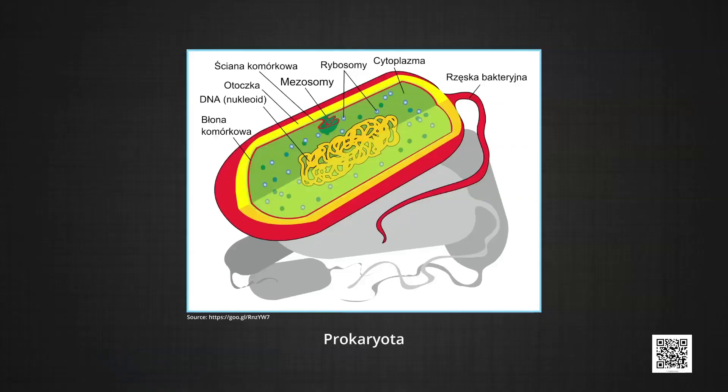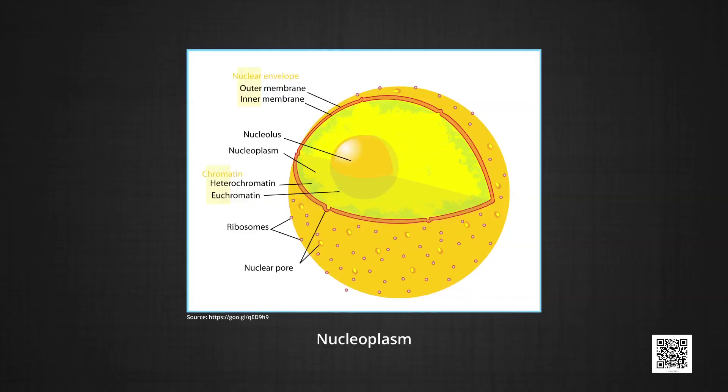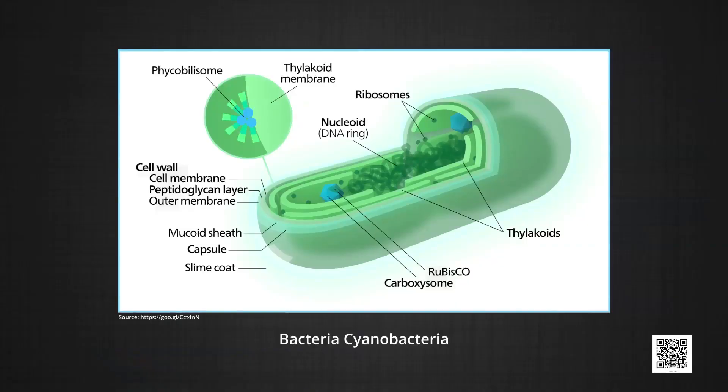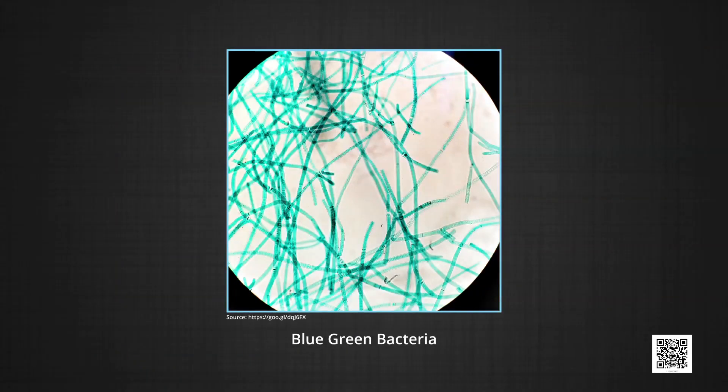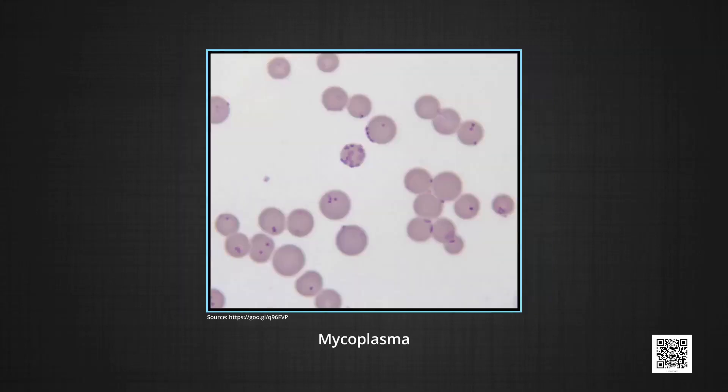First kingdom: Monera. Monera is also known as prokaryote as it contains all prokaryotes. The word prokaryote means 'before a nucleus,' meaning these organisms do not have a true nucleus, as no nuclear membrane is present and there is a lack of basic proteins in the nucleoplasm. Kingdom Monera includes all bacteria, cyanobacteria, blue-green bacteria, archibacteria and mycoplasma.